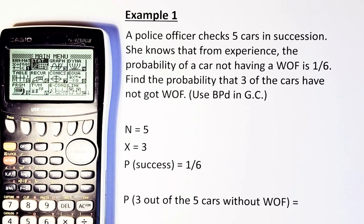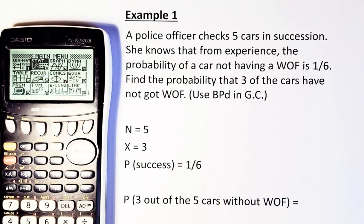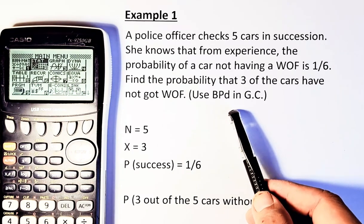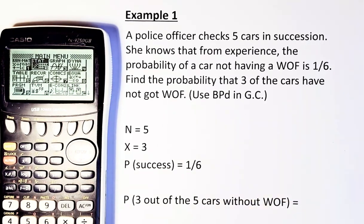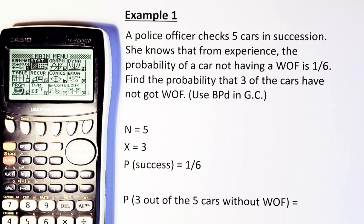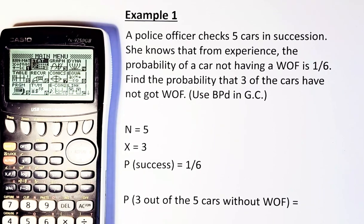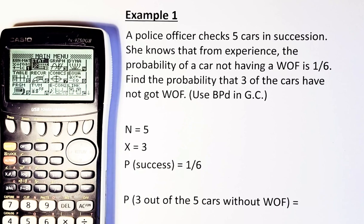You need to know that you have 3 items: N, X and P. N is the number of trials. So there are 5 cars, so N equals 5. X is the probability of success. So there are 3 out of 5, so X equals 3. And P is the probability of success, 1 out of 6. So once you know these 3 items, you can key into the calculator and you have to use BPD in your graphic calculator because it is asking you for 3 out of 5. It is different from less than 3, which I am going to do in the next example. So if they say exactly 3 out of 5 cars have no warrant of fitness, then we will use BPD. Without further ado, let's start the calculation.